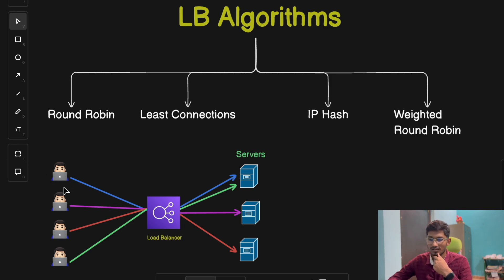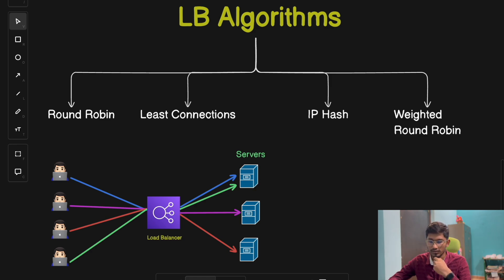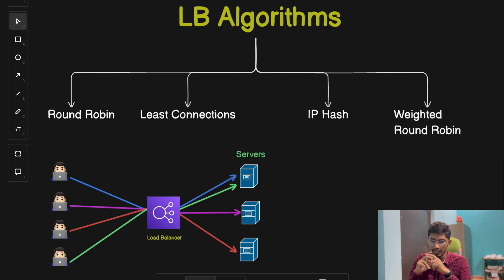First is the round robin algorithm. The load balancer sends each incoming request to the next server in line, one by one in a sequential manner — like dealing cards in a game. This ensures every server gets a fair share of the load. With three servers, the load balancer sends the first request to server one, the second to server two, the third to server three, then cycles back to server one again — processing in a sequential round robin manner.